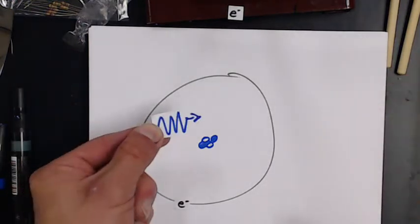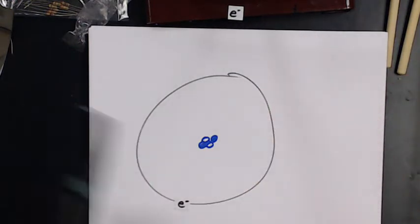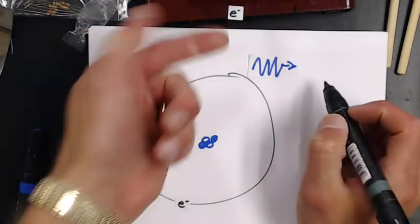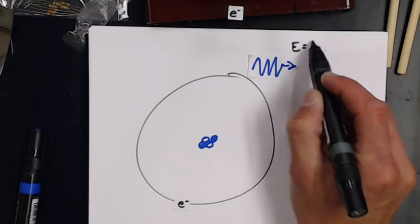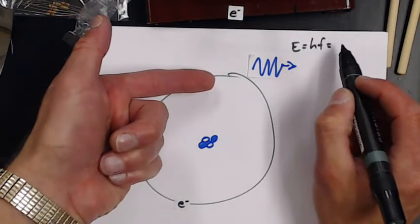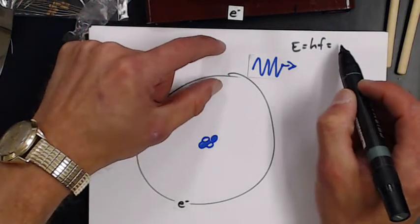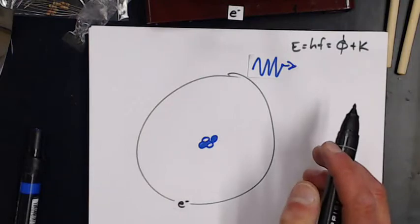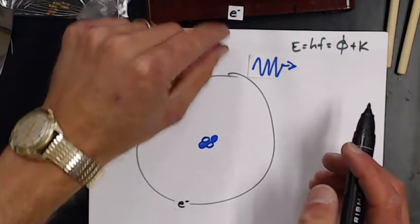This energy is enough to knock that off, so the energy of that photon, which is hf, needs to be removed as the energy to remove from the atom, and then some of that will turn into kinetic energy.